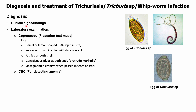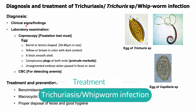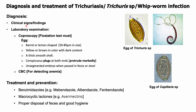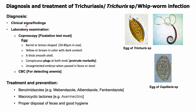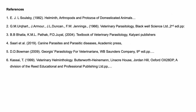Treatment of whipworm infection includes administration of benzimidazole anthelmintics such as mebendazole, albendazole, and fenbendazole. Administration of macrocyclic lactones such as avermectins at regular intervals of three to four months is another effective treatment measure. In kennel dogs, it is also recommended to repeat treatment three times at one-month intervals. Proper disposal of feces on a regular basis and maintaining good hygiene is crucial for the control and prevention of trichuriasis in both animals and man.